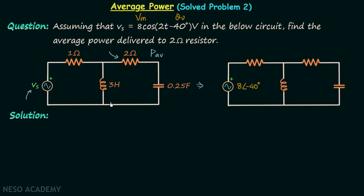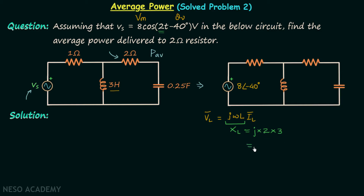Moving on to the inductor, it has a value of 3 henries. From the phasor relationship for an inductor, the phasor voltage equals jωL times the phasor current through the inductor. So jωL is the reactance offered by the inductor. In our case, XL = j × 2 × 3 = j6 ohms.